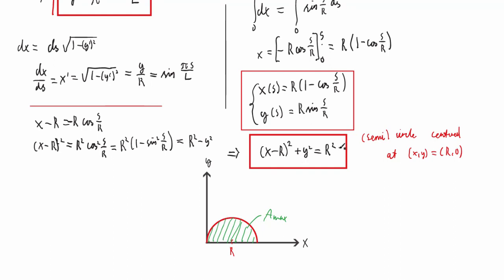We did find several other solutions — those with n > 1 also made the functional stationary, but they didn't correspond to maximum area, as you can see from their shape crossing the x-axis. So when doing variational calculus this way, we do not necessarily obtain a maximum or minimum, but a stationary point. It's up to us to do additional analysis to determine which corresponds to the maximum or minimum. When applied to mechanics, this turns out not to be a problem.